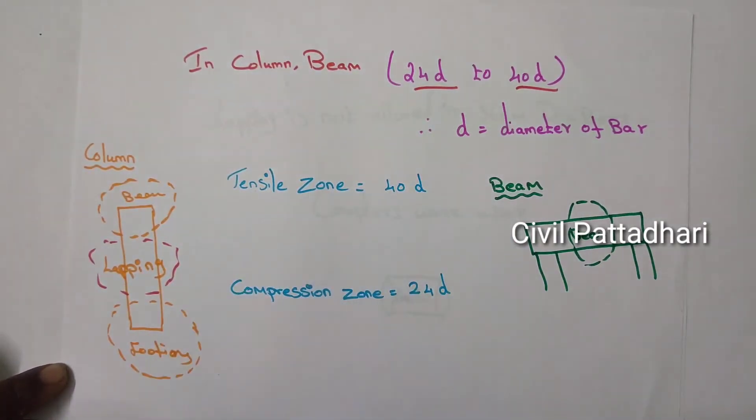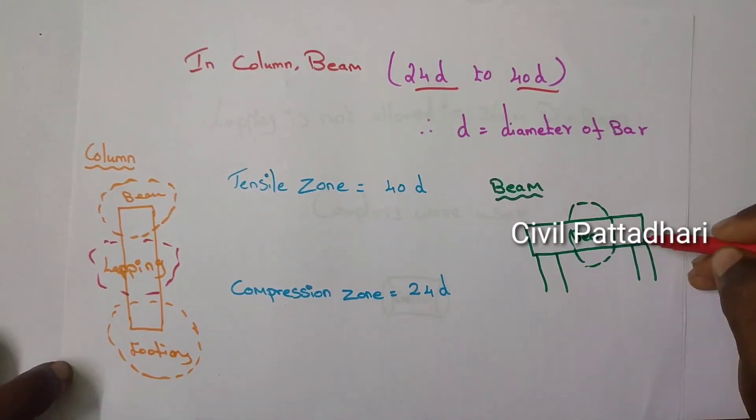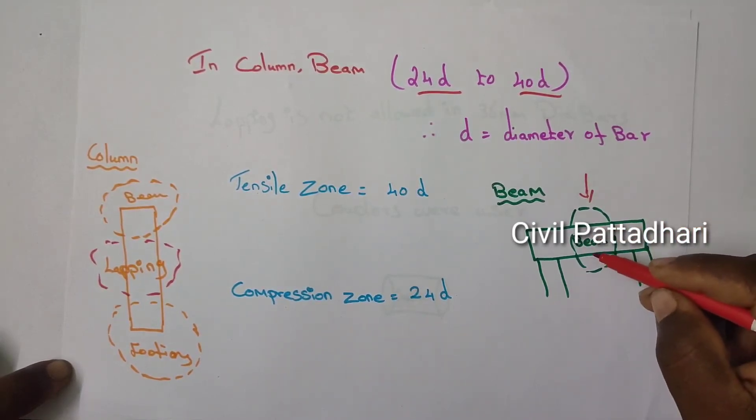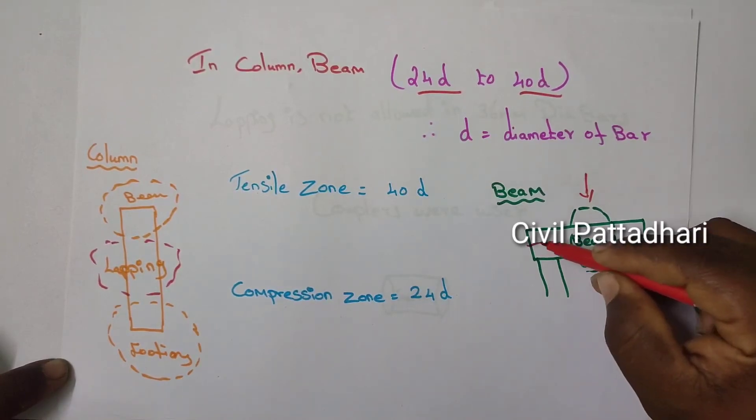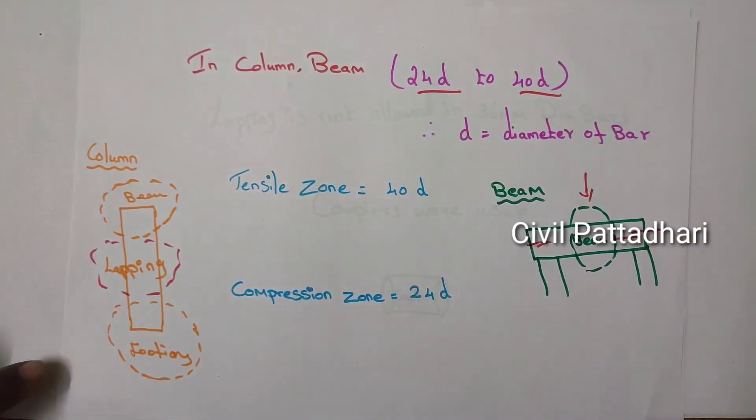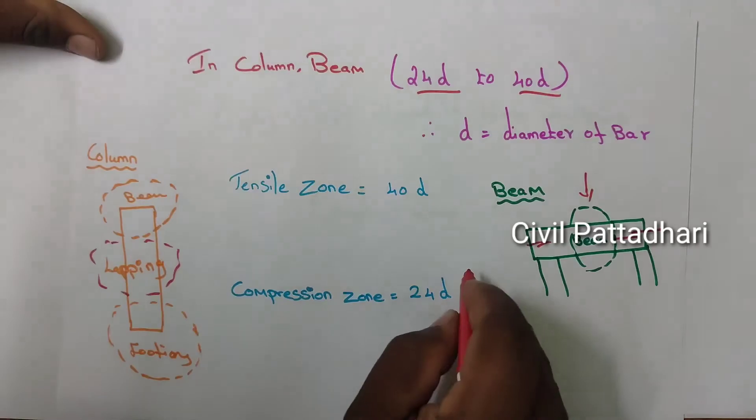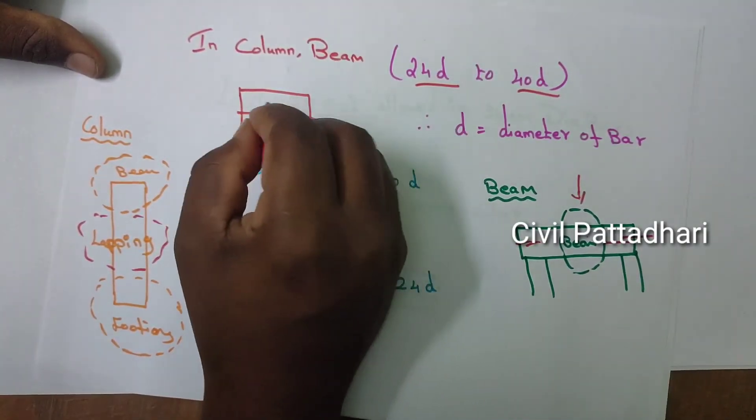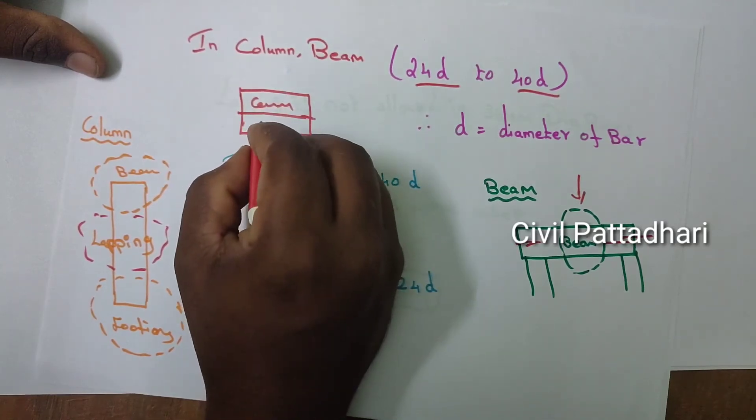In the beam, both the edges will be lapped, and at the mid, due to the maximum load at the mid span, the lapping should not be done at this point. So the lapping is only done on the edges only. In beam section, the formula will be changed based on the compression and tensile side section. This is called a beam. Here the upper portion will be the compression, and the down portion will be the tensile force acting on it.